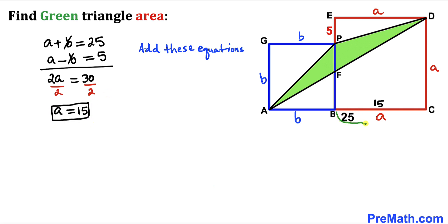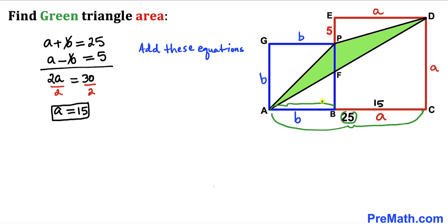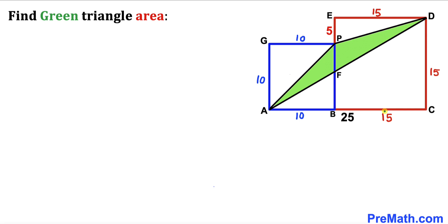The side length a turns out to be 15. Since the whole AC length is 25, the b length is 25 minus 15, which gives us 10. So the side length of the red square is 15 across the board, and the blue square is 10 units across the board.